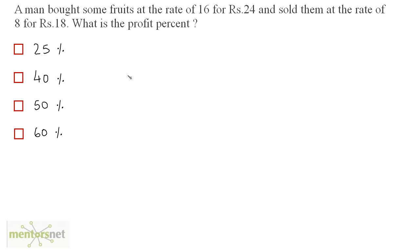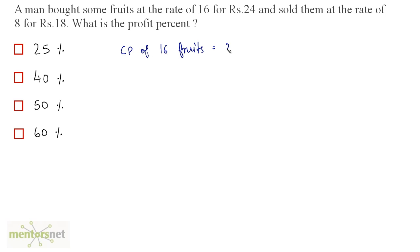A vendor bought some fruits at the rate of 16 for Rs.24 and sold them at the rate of 8 for Rs.18. What is the profit percentage? The man bought these fruits at the rate of 16 for 24, so the cost price of 16 fruits is equal to 24.